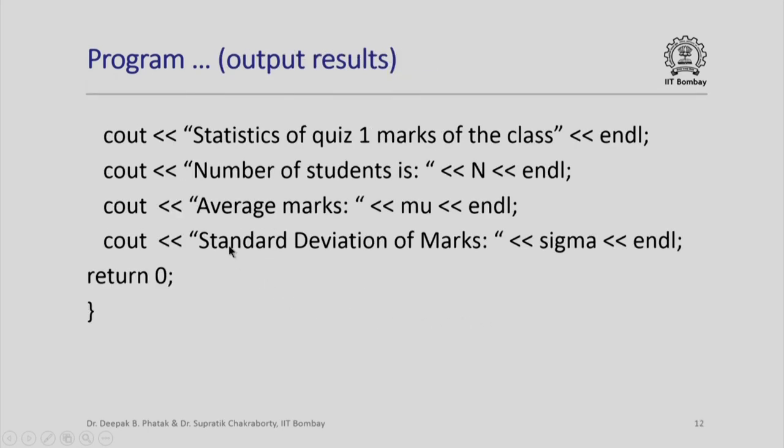Finally, we produce the output. Of course, you can see that we are producing an output with appropriate strings explaining what we are saying. So, statistics of quiz 1 marks for the class, number of students is n, average marks is mu, and standard deviation of marks is sigma.